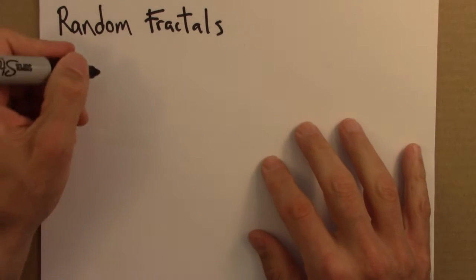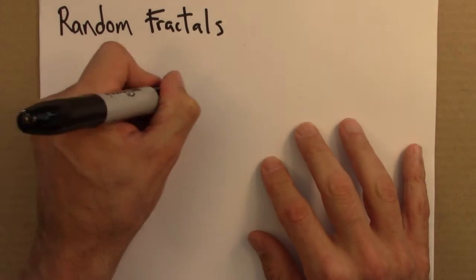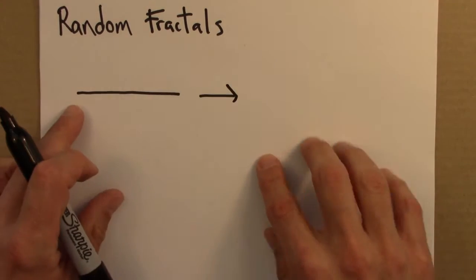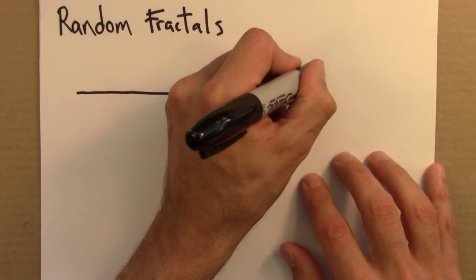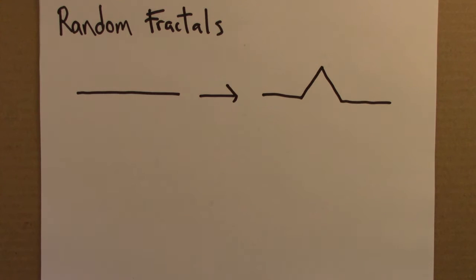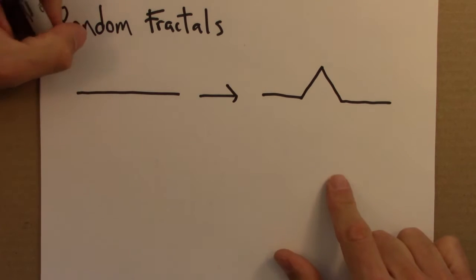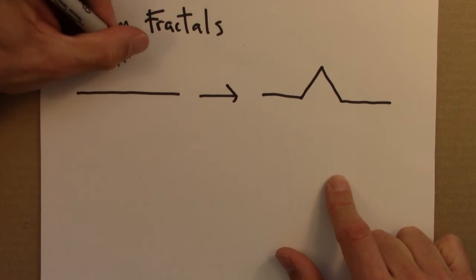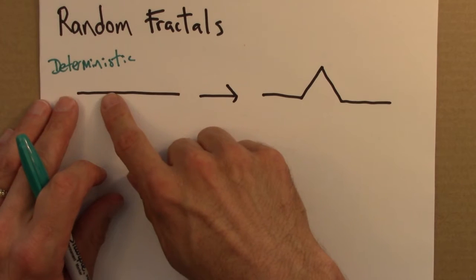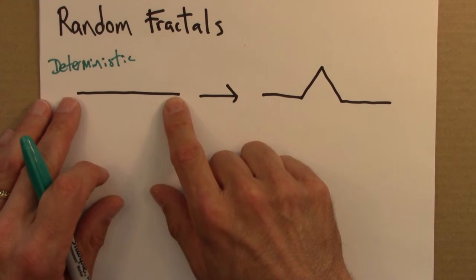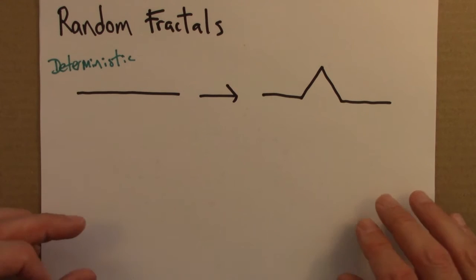So thus far, we've been looking at deterministic processes, where, for our friend the Koch curve, a line is replaced with a bent line. And this rule is deterministic because there's no element of chance in it. There's no randomness or stochasticity. The starting shape and this rule completely determine what happens next.